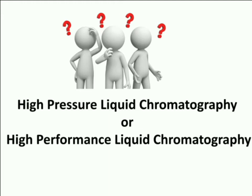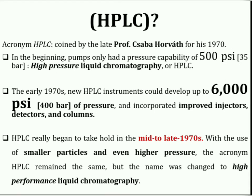The next question is why HPLC has two full forms: high pressure liquid chromatography or high performance liquid chromatography. The acronym HPLC was coined by the late Professor Cas Horvath for his 1970 work, and originally indicated the fact that high pressure was used to generate the flow required for liquid chromatography in packed columns. In the beginning, pumps only had a pressure capability of 500 psi, and this was called high pressure liquid chromatography or HPLC.